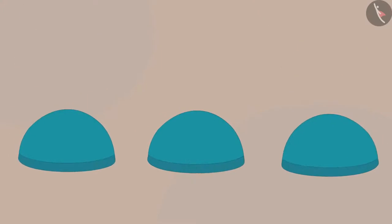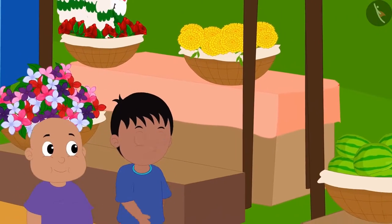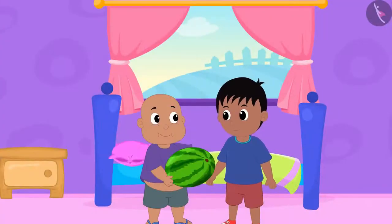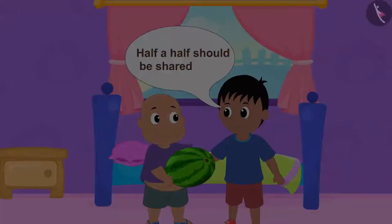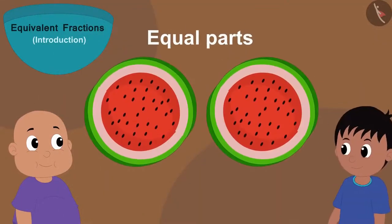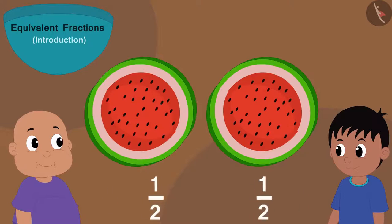Children, in this video we will learn about equivalent fractions. Raju and Babalu are going to buy a watermelon from the market. They bought a watermelon from Bunni's stall and took it to Raju's house. Raju told Babalu that he should divide the watermelon in two halves. Babalu cut the watermelon into two equal parts and gave one part to Raju. So we can say that both Raju and Babalu got one by two, or half, of the watermelon.